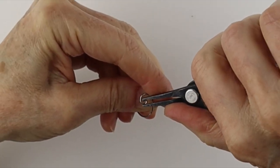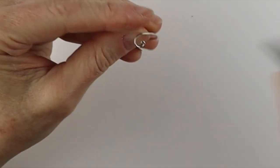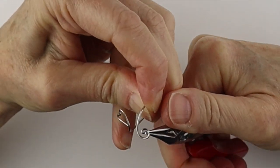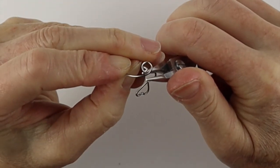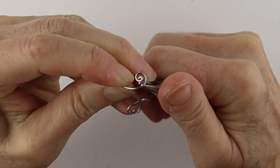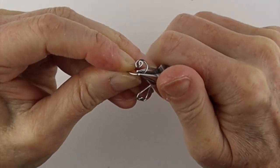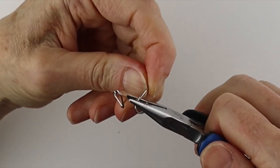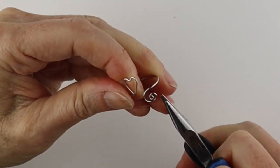You could pinch that in a little bit to close the gap and just keep using your round pliers. And we're just going to form the spiral. We don't need to go around too much, depends on how big you want the ring to be.